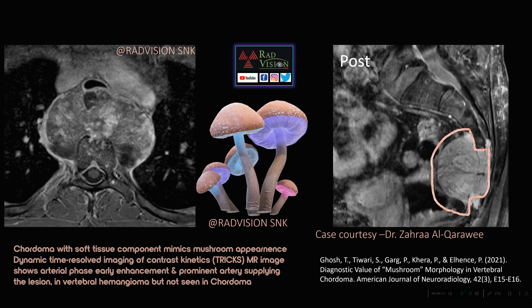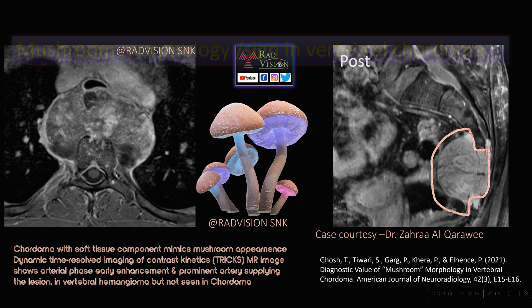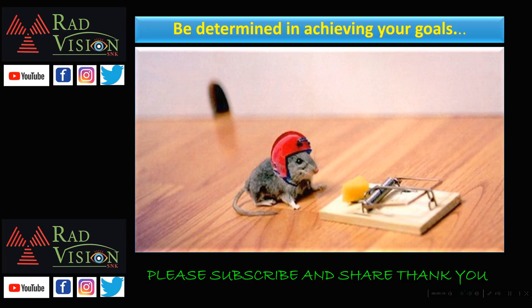The most common differential for this mushroom appearance can be a hemangioma. Dynamic time-resolved imaging of contrast kinetics (TRICKS MR imaging) shows arterial phase early enhancement and prominent arterial supply to the lesion in vertebral hemangioma. Whenever you see this mushroom-type appearance — seen in either chordoma or hemangioma — dynamic TRICKS imaging helps differentiate hemangioma from chordoma, because in hemangioma there is early arterial phase intense enhancement and a prominent artery supplying the lesion, which is not seen in chordoma. Thank you all.